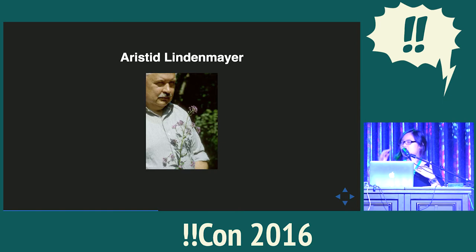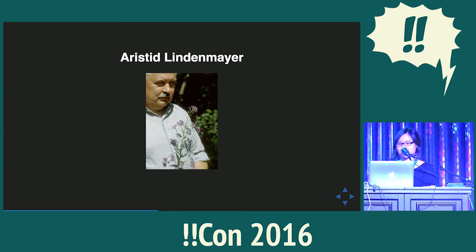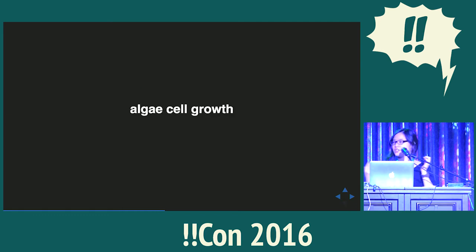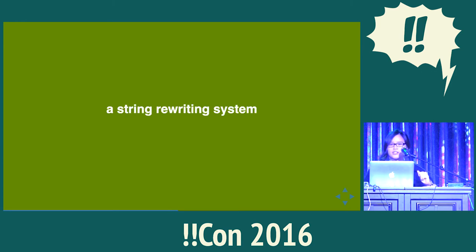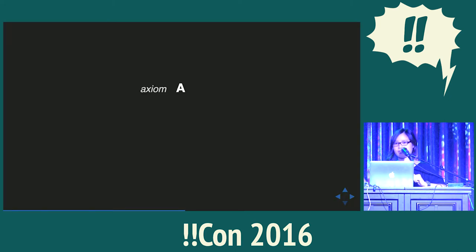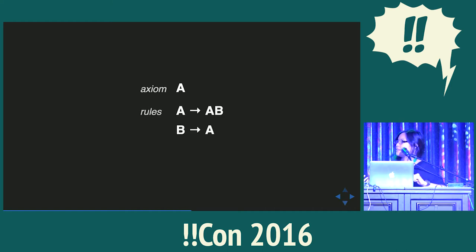Biologists noticed this repetitive nature in plants, especially this guy by the name of Aristide Lindenmayer, who noticed this repetitive nature in algae cell growth. He wanted a way to describe this succinctly, and he came up with L-Systems. L-Systems is essentially a string rewriting system where you start off with a string that could represent a structure. For example, if you're talking about algae, A could be a type of algae cell. You have a set of rules used to replace parts of that string — so A gets replaced with AB, and B gets replaced with A — as a way to model the evolution of growth.